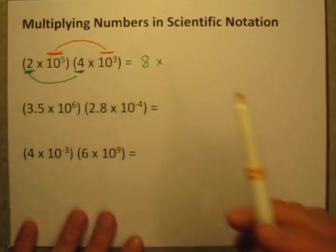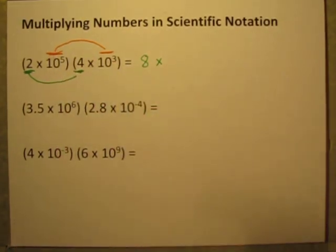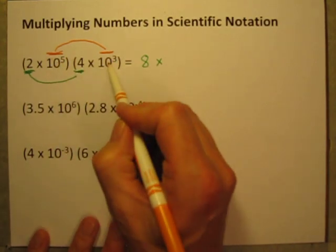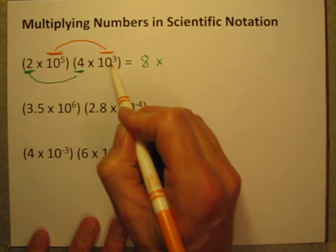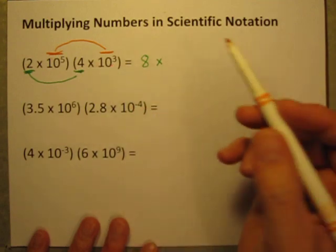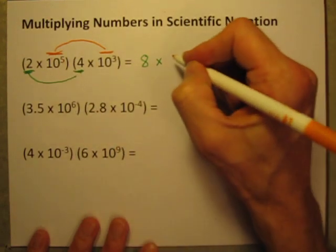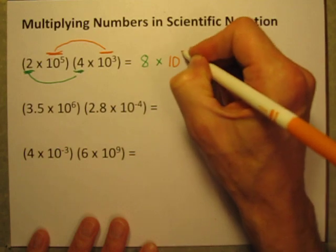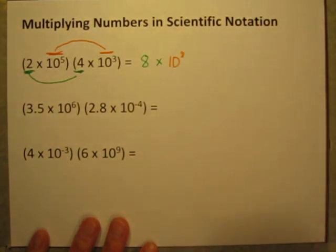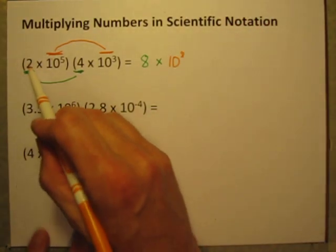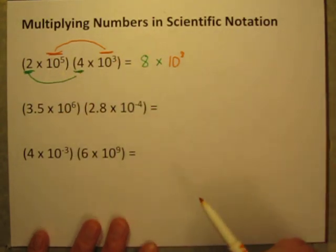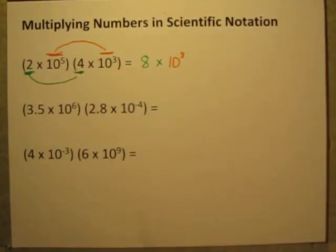And now, how do you multiply these powers of 10? If you know your rules of exponents, and I have other videos about those. When you're multiplying numbers with exponents, and if the bases are the same, you can just simply add the exponents. So this 5 plus 3 is 8. So this is going to be 10 to the 8th power. And that's it. It's 2 times 4 is 8. 10 to the 5th times 10 to the 3rd is 10 to the 8th.